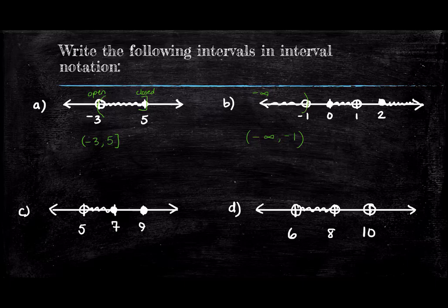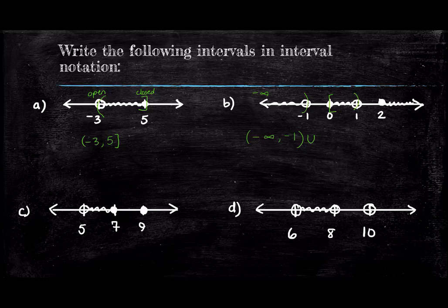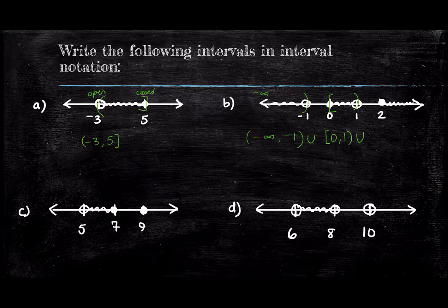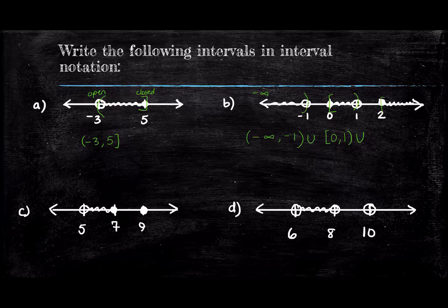To indicate that there are more intervals, we draw in a union symbol. Our second interval starts at zero and terminates at one. We see the zero is included and the one is excluded from the interval, so this interval is square bracket zero, comma, one with a parentheses. Again, we need to use the union symbol because we have one more interval. For this last interval, I'm going to give you a second to think and see if you can predict how we will write that.